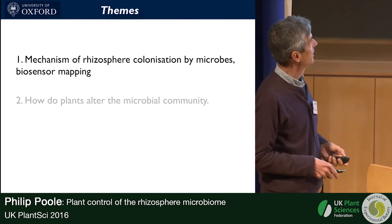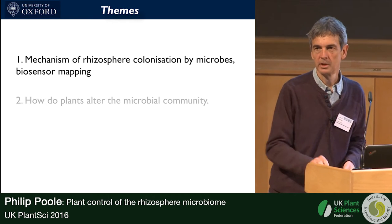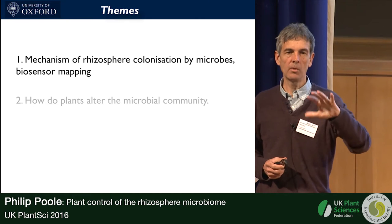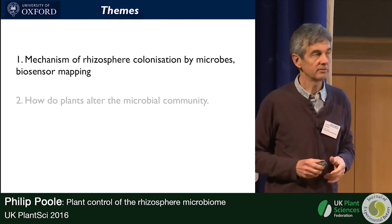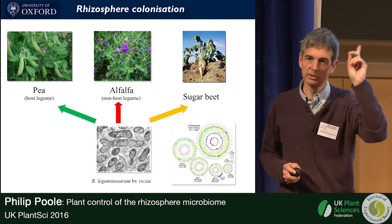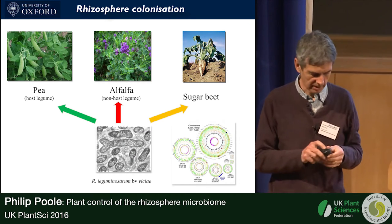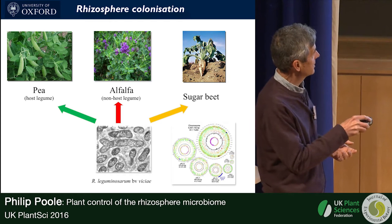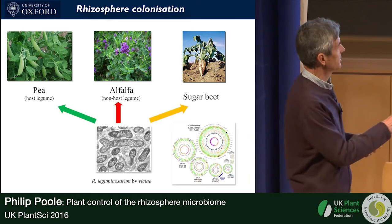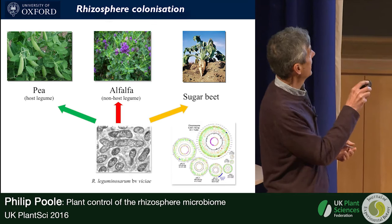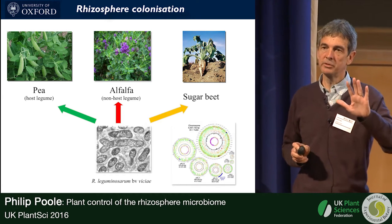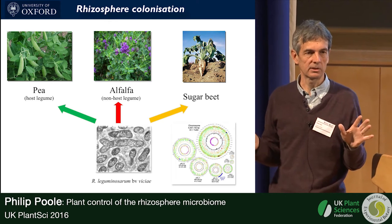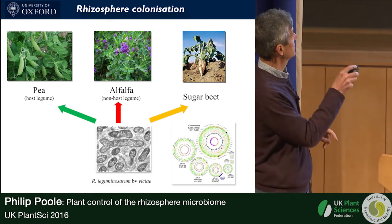The first thing I wanted to cover was the mechanism of rhizosphere colonisation by microbes — how we could start to understand from the particular example of rhizobium how a microbe colonises a root. We took three different plants: pea, which is the legume we mostly work with and the host for rhizobium leguminosarum bv. viciae; alfalfa, another legume but not a host it can nodulate; and sugar beet, a non-legume.